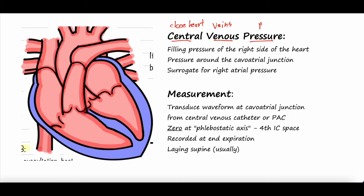Here's a heart illustration. We have the right atrium, right ventricle, and the tricuspid valve between them. Then there's the left atrium, left ventricle, and the mitral valve. This is the pulmonary artery system going to the lungs, and here is the aortic arch. These two vessels here are the inferior vena cava — the IVC — and the superior vena cava — the SVC — the two big veins that dump blood into the right atrium.